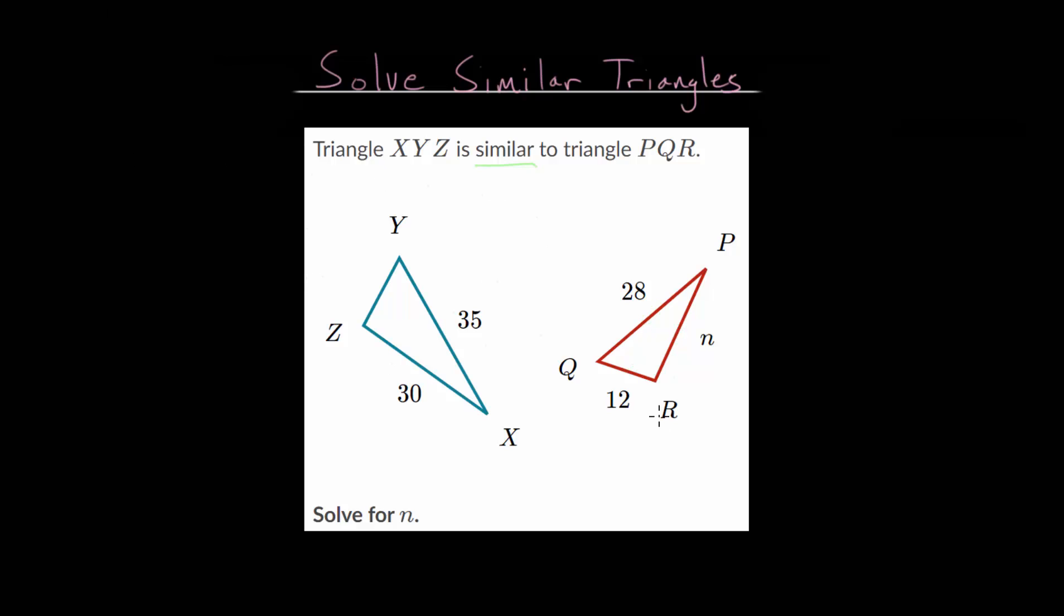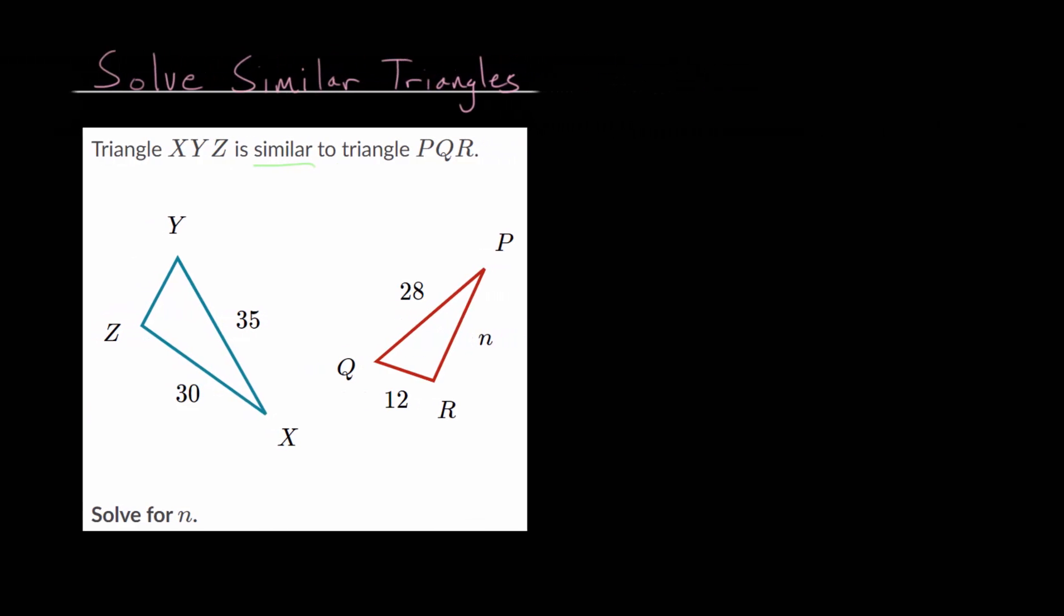And what we want to do in this problem is essentially figure out what we are multiplying by to go from the smaller triangle to the bigger triangle. Or we could look at it the other way as well. We can start with the bigger one and figure out what we're dividing by to go back to the smaller triangle. But the main point is that the side lengths are proportional.